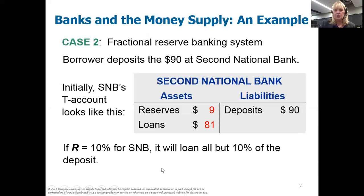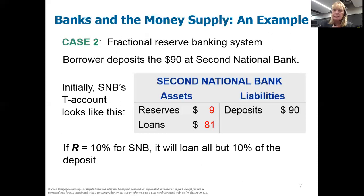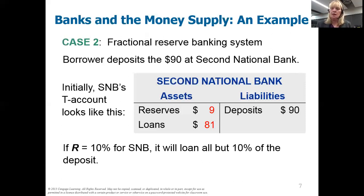Each time the money passes through the bank, it increases the money supply — there's a new bank deposit that increases the money supply each time it goes around the circle. So how far can that go? How much can the money supply ultimately increase by the time this initial deposit has gone through the entire banking system?